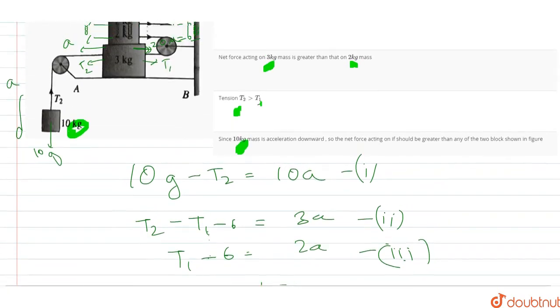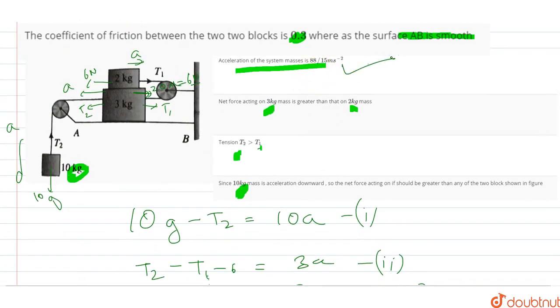Meters per second square. Okay, so the acceleration is 88 by 15 meters per second square. Net force acting on 3kg mass is greater than that of 2kg mass. So this option is okay.